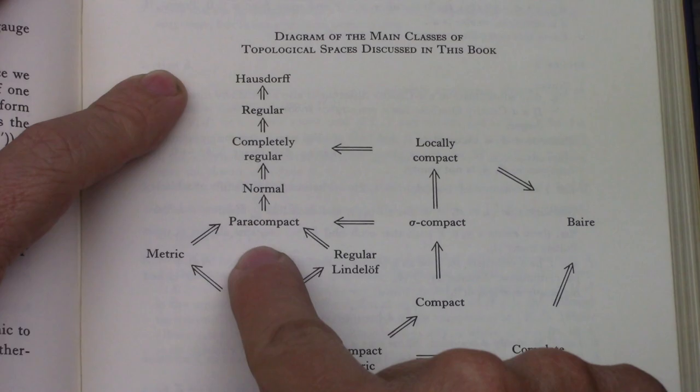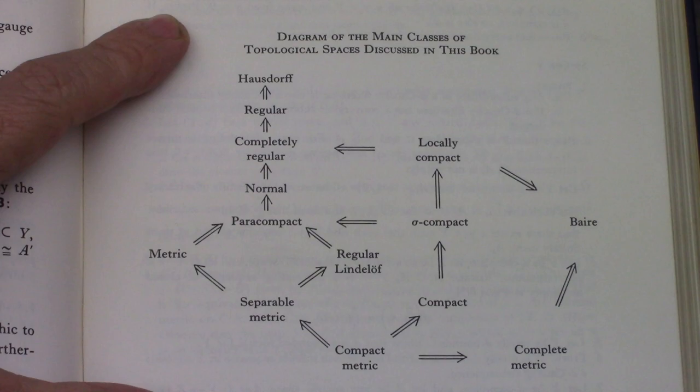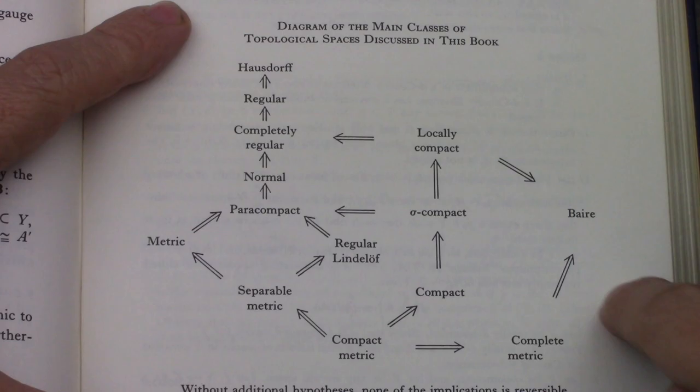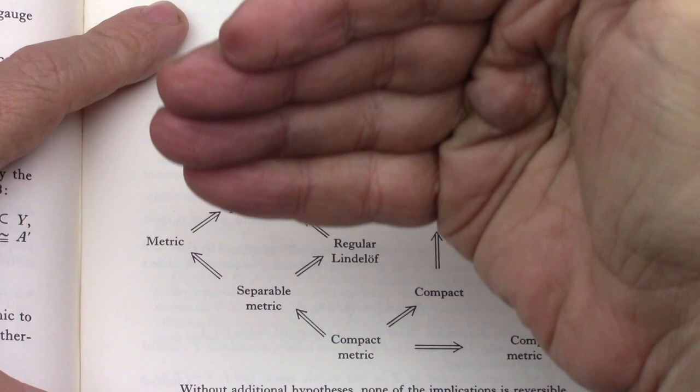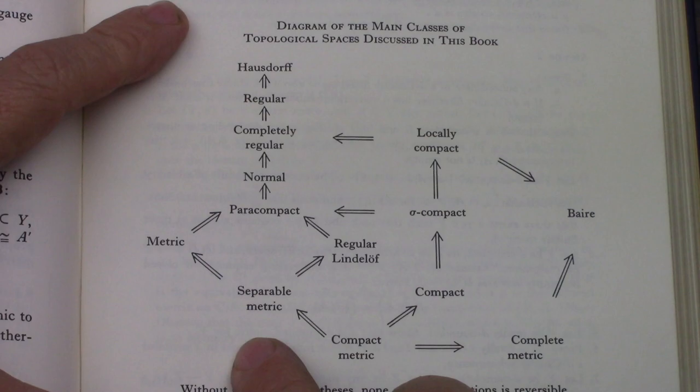The theorem in Munkres is, a Hausdorff space is paracompact then it is normal. So it's got to be Hausdorff. I think the way that I read this diagram, and I'm going to do a lot more topology than I've done so far, is everything in here is Hausdorff. And so, as you keep going higher up the mountain, everything has to be all the other stuff.